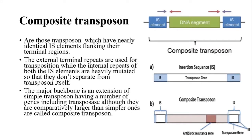The next bacterial transposon is the composite transposon. These are transposons in which the central coding region is surrounded by two IS elements. The external inverted repeats of these IS elements are used for transposition, while the internal repeats of both IS elements are heavily mutated so that these elements do not separate from the transposon itself. Also, the transposase gene of both IS elements is lost or mutated, so that transposition is controlled by the transposon and not by the IS elements.